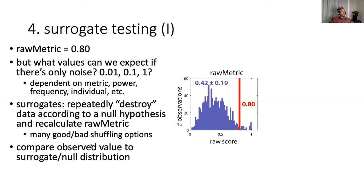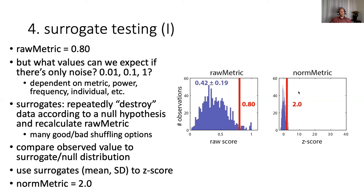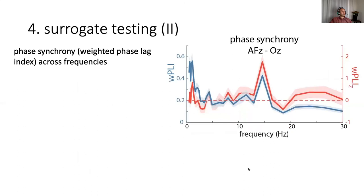So we can now compare our observed value to the surrogate or null distribution. And what we can also do is use the surrogates to now Z score our raw metric. So now we Z score everything, so our original surrogates have a mean of 0 and a standard deviation of 1. And now we can see how far from that normal distribution our observed value truly is in terms of standard deviations.